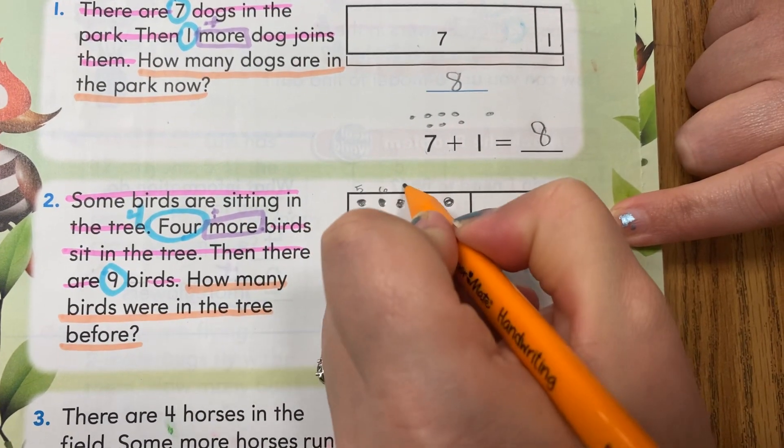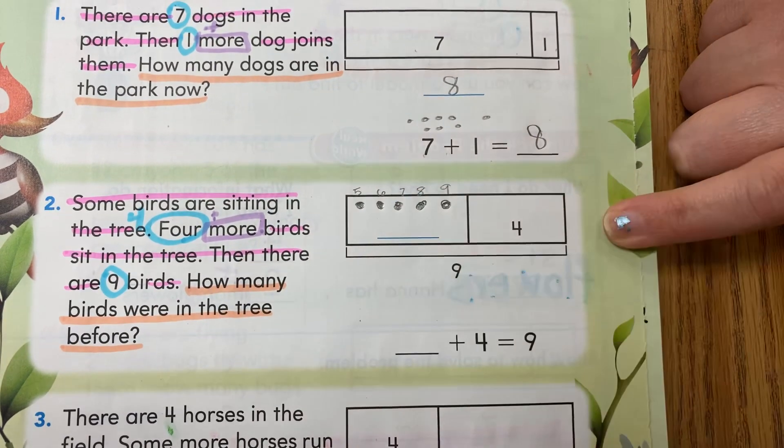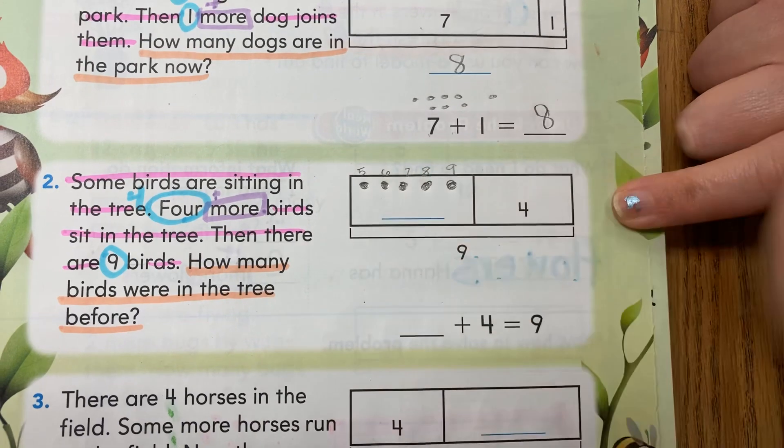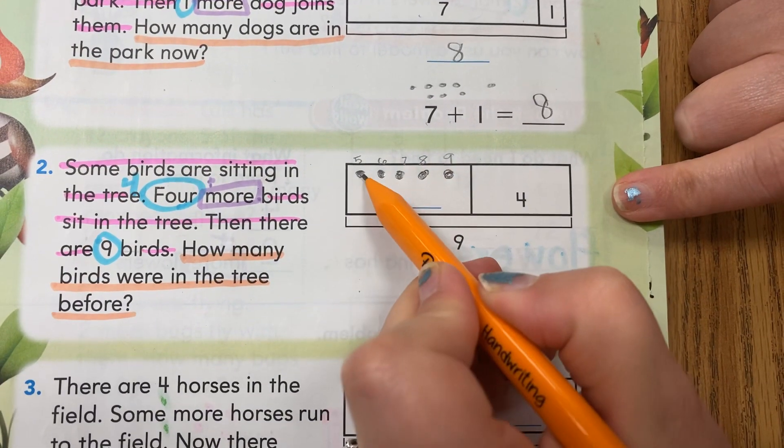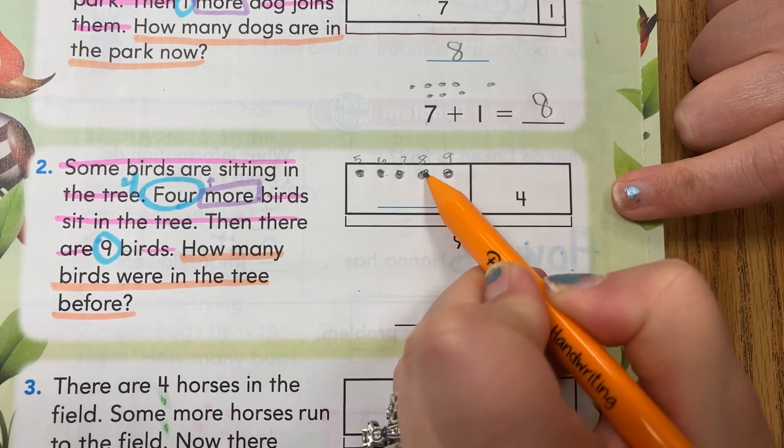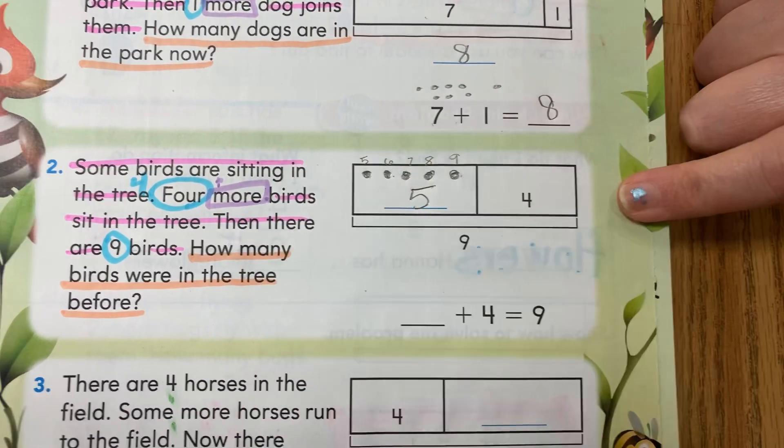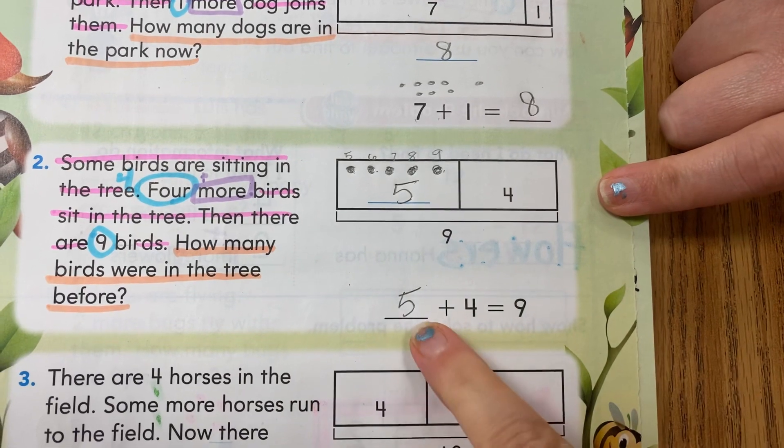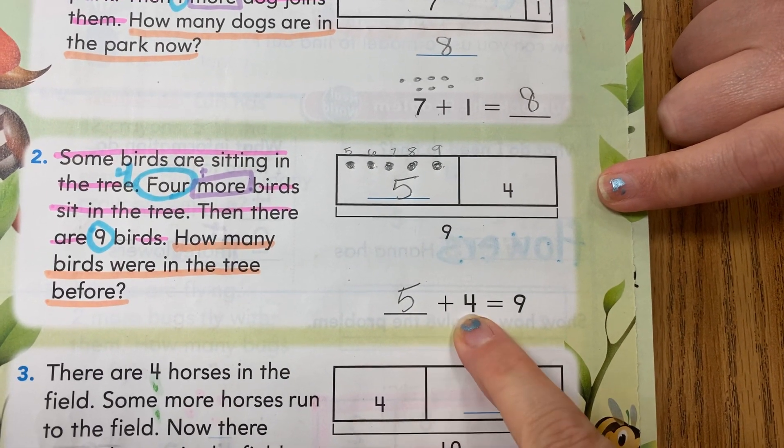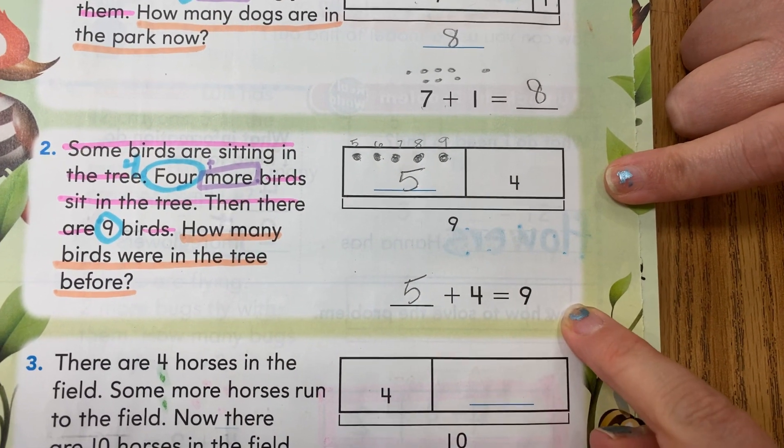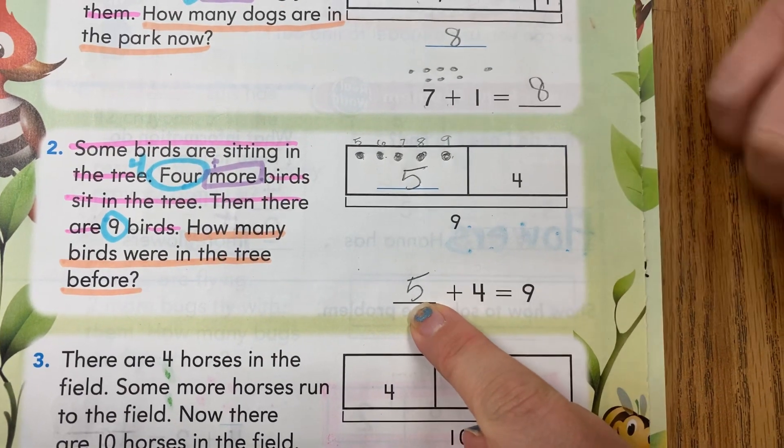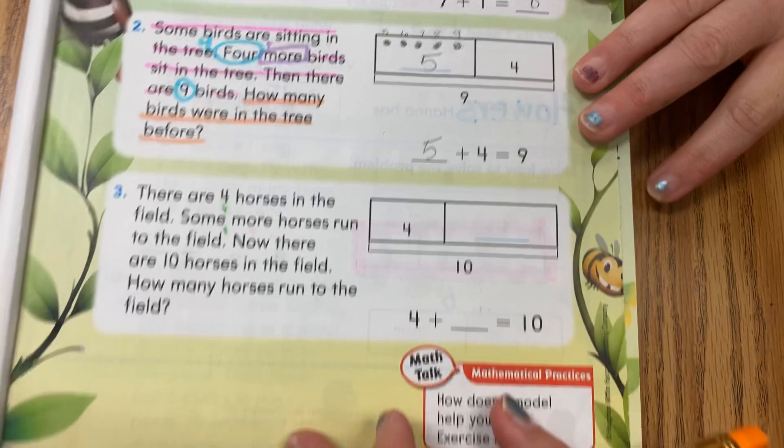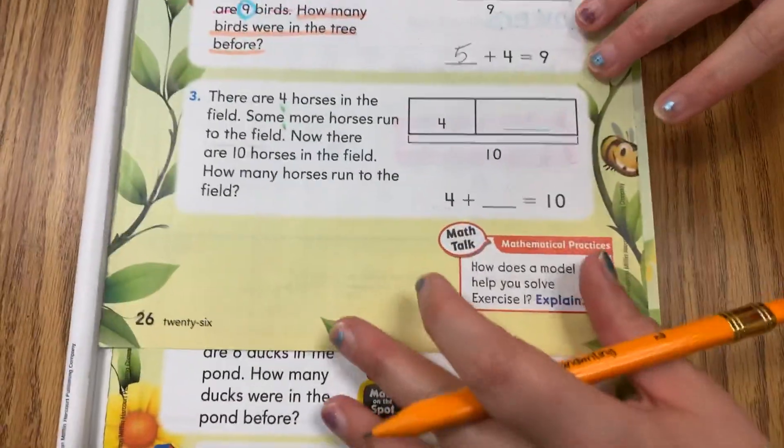So I counted on. I started at the next number—this was my five—and I counted on: five, six, seven, eight, nine. We don't count four. Now I need to count how many dots did I create: one, two, three, four, five. So really, I needed five more. So the truth is five plus four more equals nine. So there were five birds in the tree already.